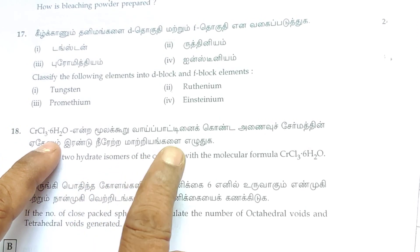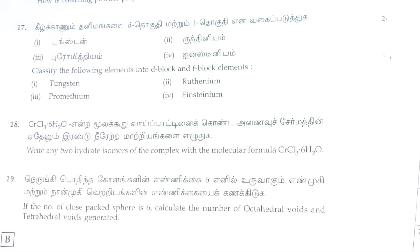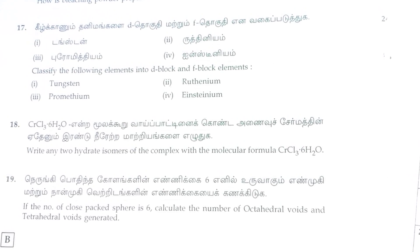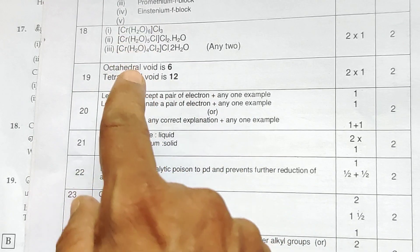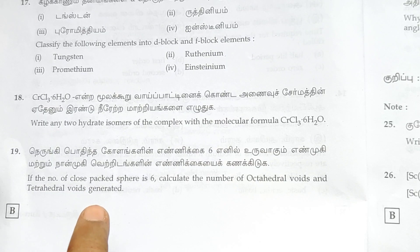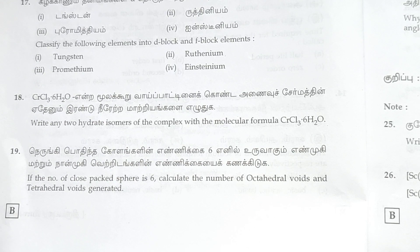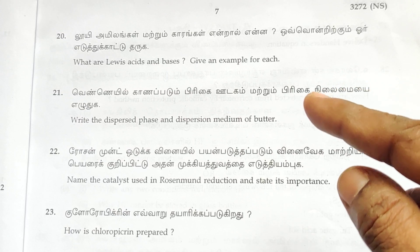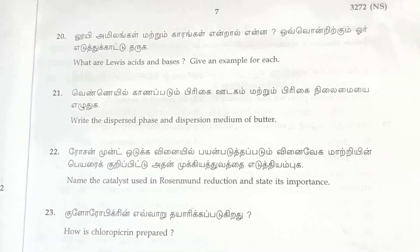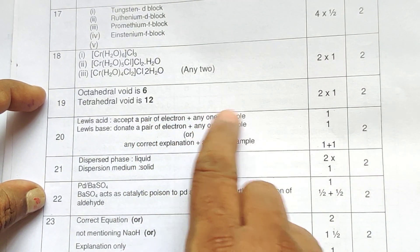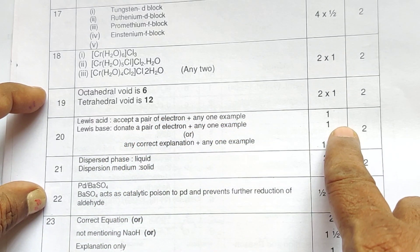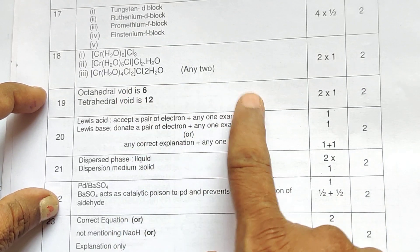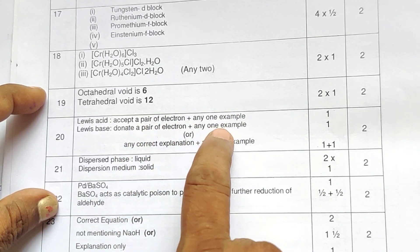CrCl₃·6H₂O — enter 3Y part — two marks. For tetrahedral voids and octahedral voids: one mark each. If you have any correct explanation with one or two examples — the definition, curve, and example — that gives two marks.